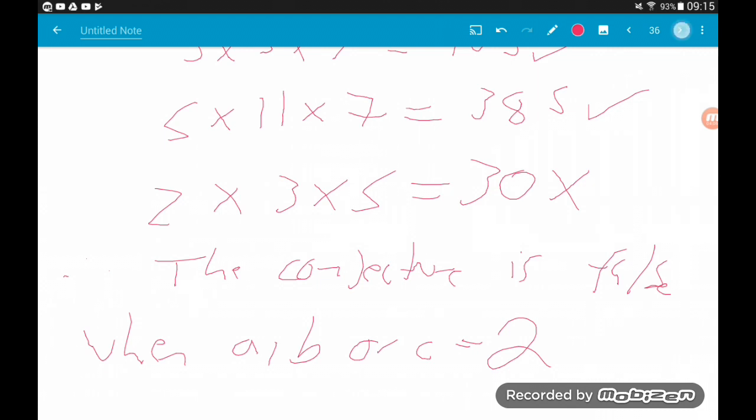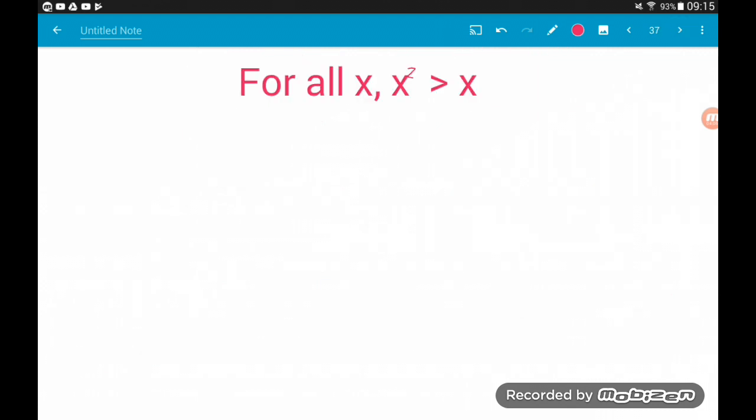Okay, example 2. For all x, x squared is greater than x. So this sounds like it should be true. Let's just throw in some numbers. Here it's important to realize we are not given a restriction on the type of number x can be. We're not told it has to be integer, we're not told it has to be positive, it doesn't have to not be zero, it doesn't have to not be negative.